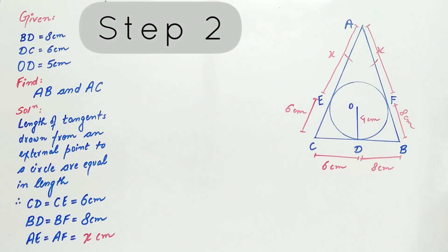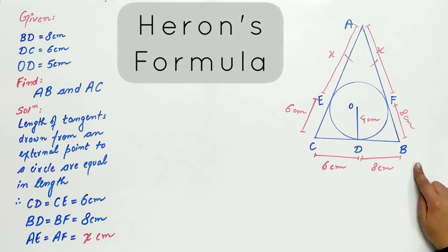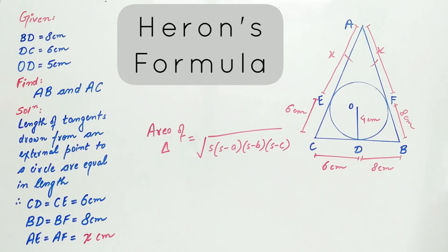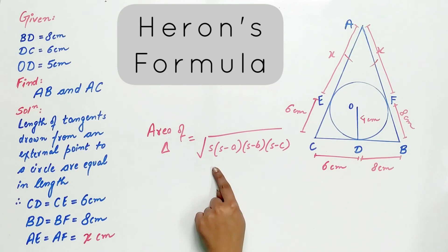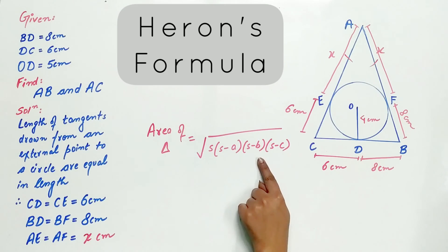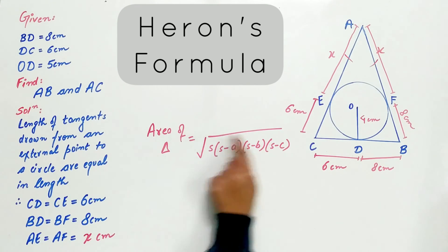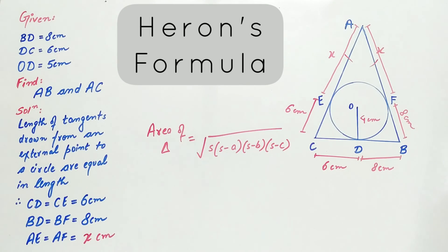Let's move to Step 2. We will use Heron's formula to find the area of triangle ABC. Remember Heron's formula? According to Heron's formula, area of triangle equals the square root of s(s−a)(s−b)(s−c), where s equals (a+b+c)/2 and a, b, c are the lengths of the sides of the triangle.